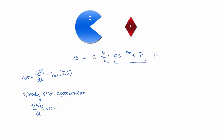The enzyme-substrate complex is produced in the first reaction, so that has a rate of K1 times the concentration of enzyme times the concentration of substrate. It is consumed in the reverse of the first step, so we subtract K-1 times the concentration of the enzyme-substrate complex. It is also consumed in the final step that produces products, so we also subtract Kcat times the concentration of the enzyme-substrate complex.